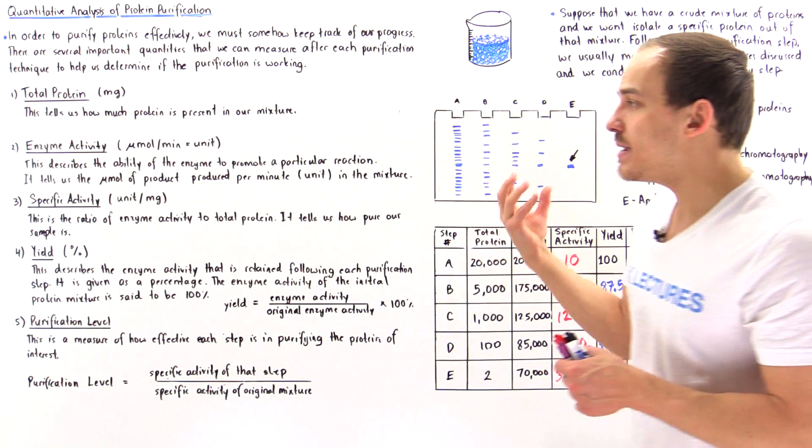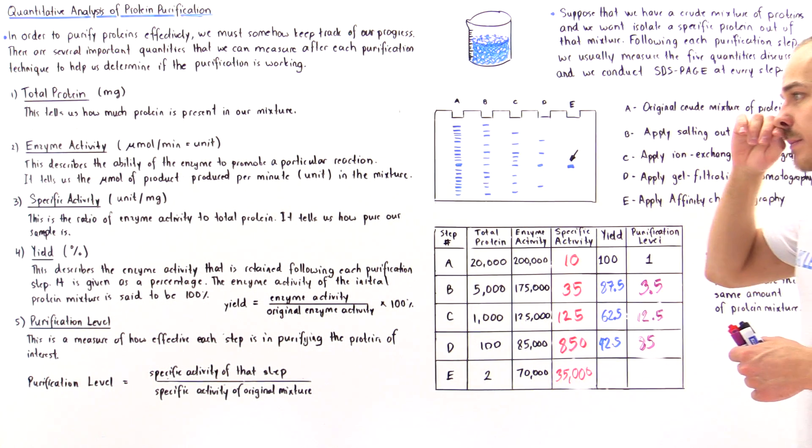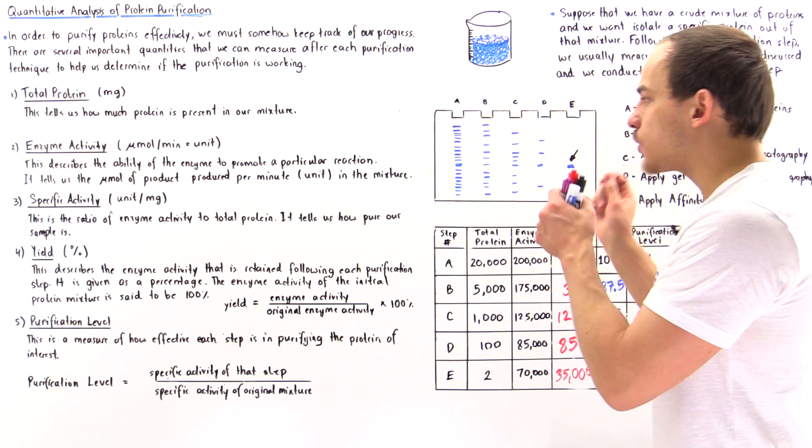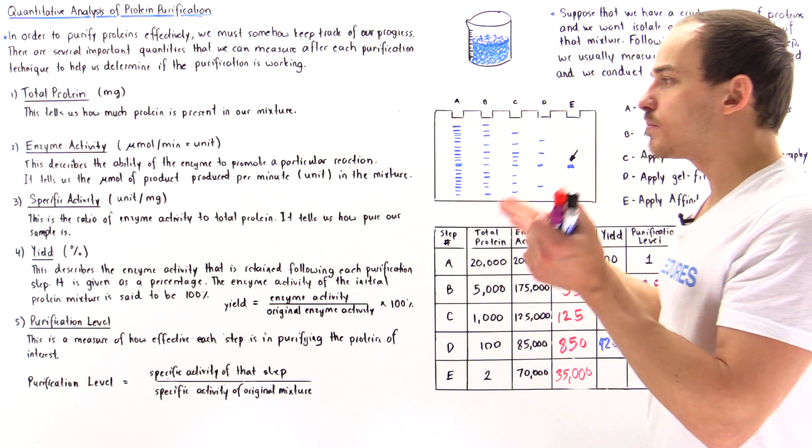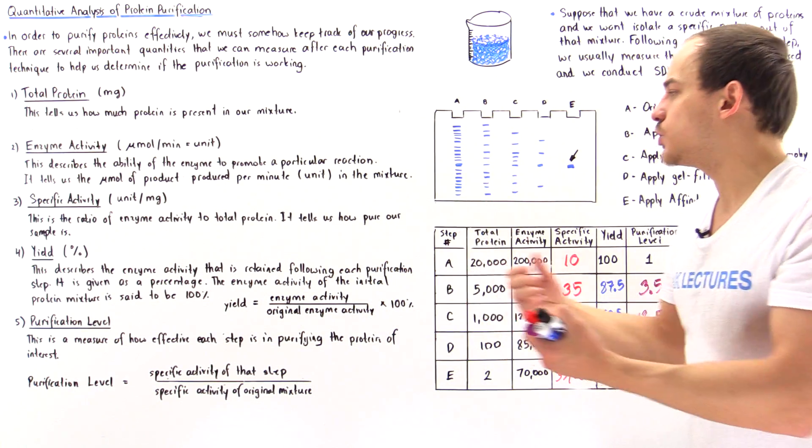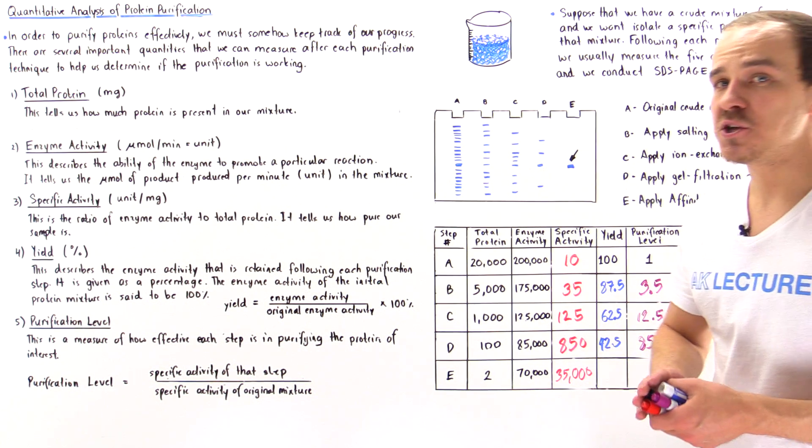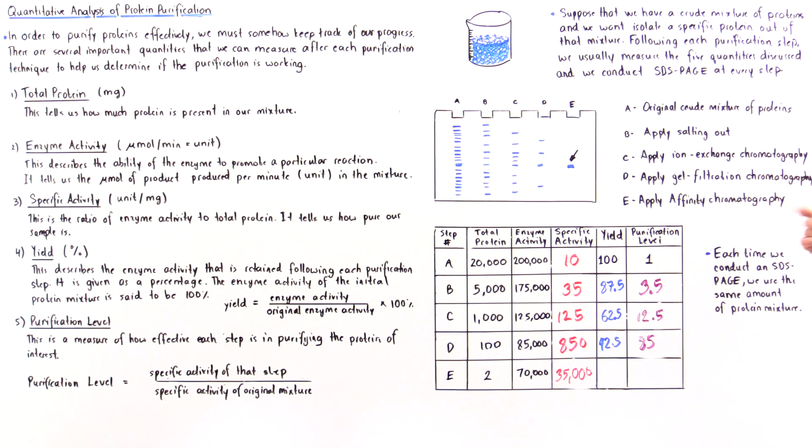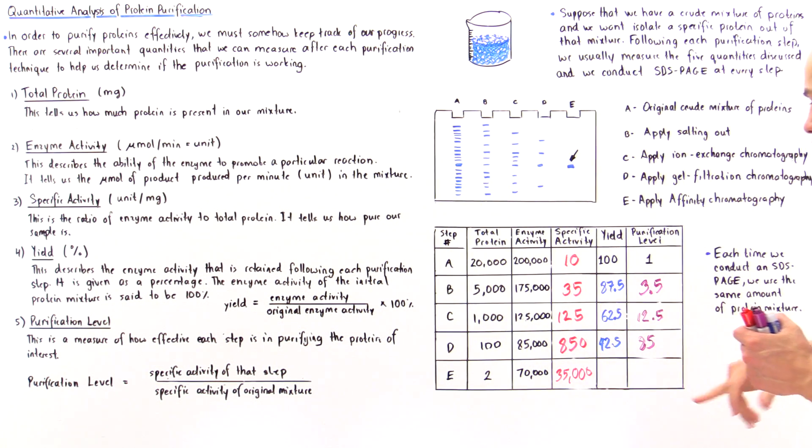When we run our mixture proteins along that column of affinity chromatography, only the protein we want to study will bind to the beads inside that column. The other proteins will essentially go down because enzymes only bind to specific types of proteins. That's why this is such a high value.